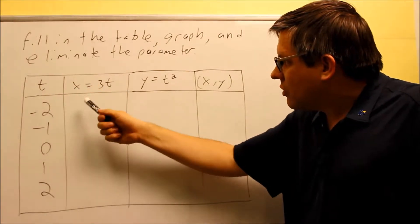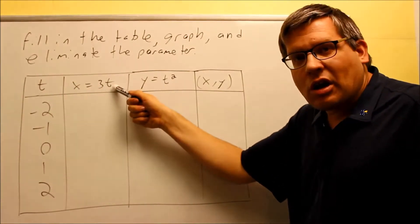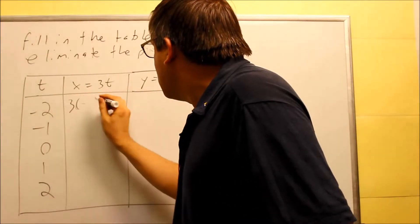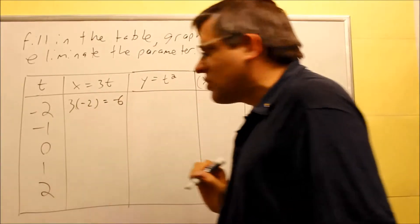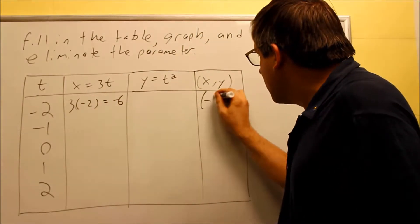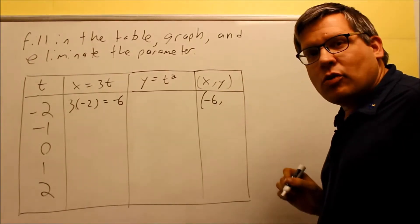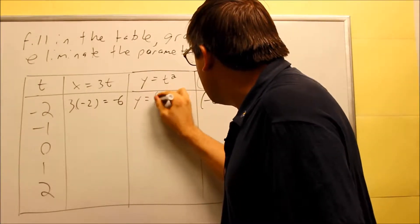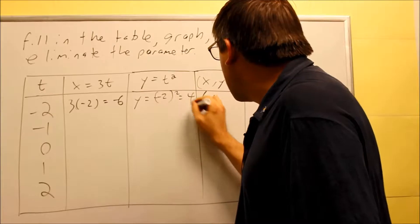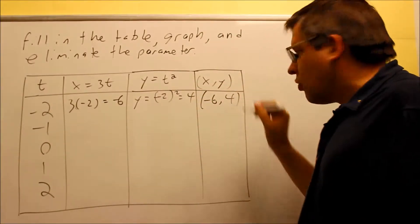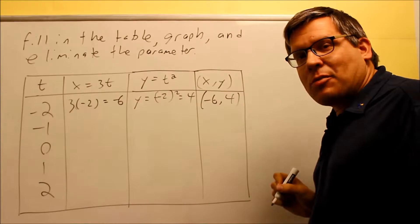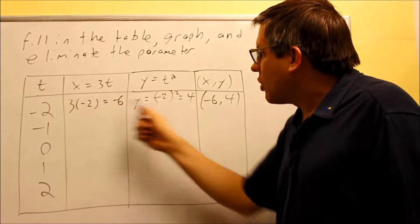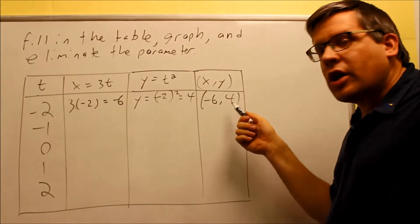Now when you put this in, if t is negative 2, that means that in this column, you're going to put a negative 2 in there for t. So you're going to do 3 times negative 2, and you get negative 6, which means that negative 6 would be the x value here with your point. Now you're going to put negative 2 into this one, and we get negative 2 squared, and that gives you 4. So now that coordinate is going to be negative 6 comma 4. So as you can see, at time t equals negative 2, we've got a corresponding x and a y coordinate, and that's what we end up getting here.